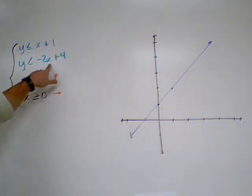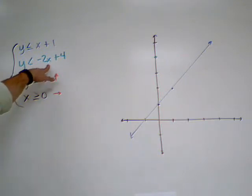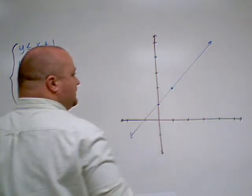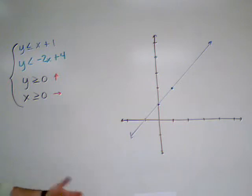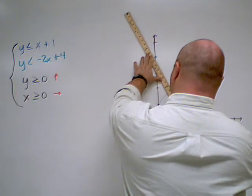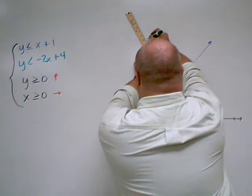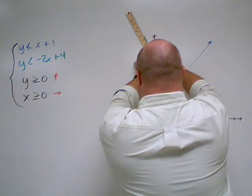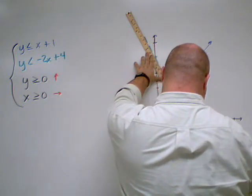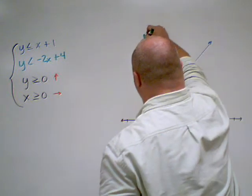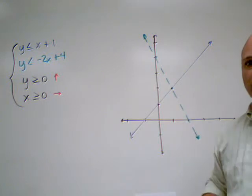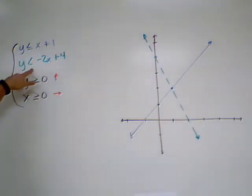Now if I plug in one again, I get negative two times one is negative two, plus four is going to give me positive two. That point is actually shared with that blue line. Since I already have two points, I'm going to go ahead and draw this line. And notice I left it dotted, that way I know that it is only going to be less than, it's not equal to there.